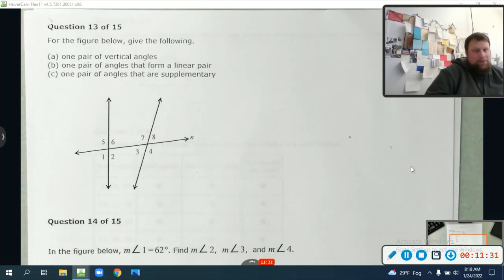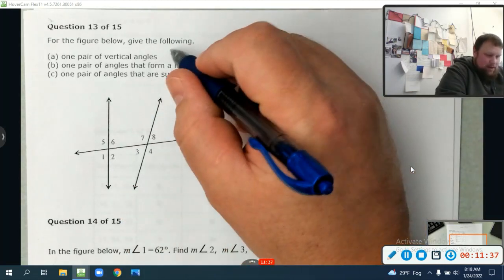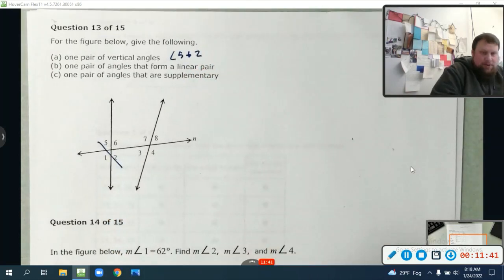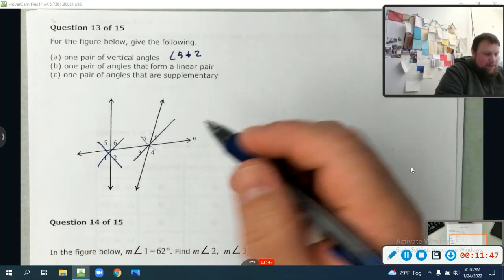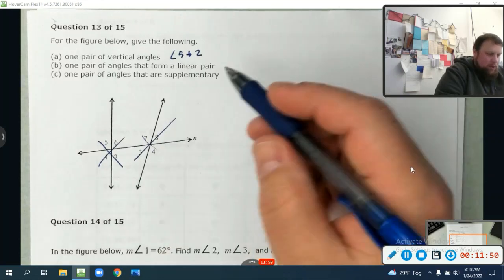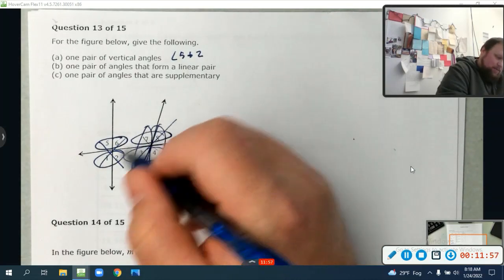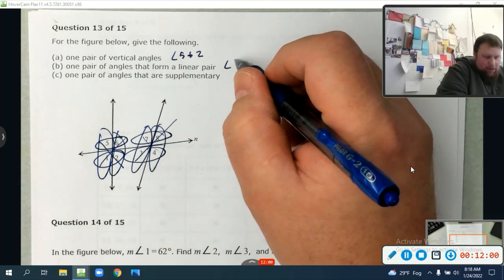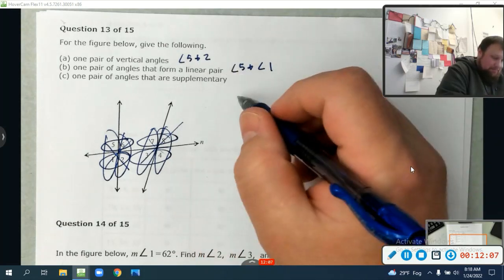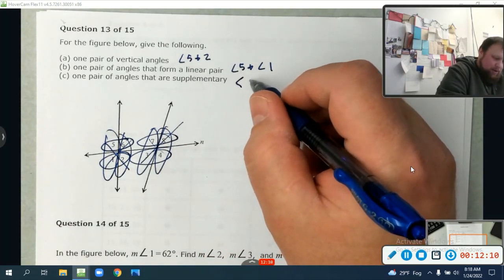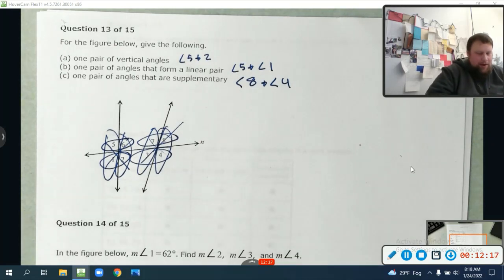This one is actually pretty simple once you know what to do. One pair of vertical angles - there's so many. Angle 5 and angle 2 are vertical, straight across from each other. That'd be 1 and 6, 7 and 8, or 7 and 4, 3 and 8. There's lots of them, but one pair is 5 and 2. One pair of angles that form a linear pair - linear pairs form a line. Every one of these form a line, but I'm going to say angle 5 and angle 1. One pair of angles that are supplementary - supplementary is a linear pair. You can put the same thing, but I'll put angle 8 and angle 4. Lots of choices.